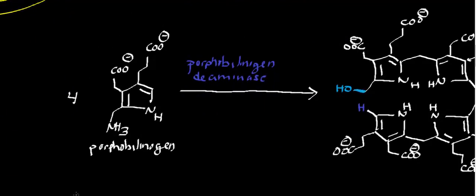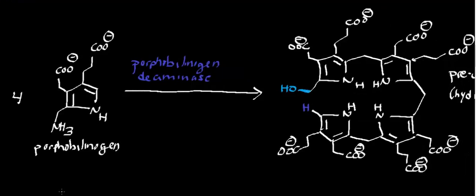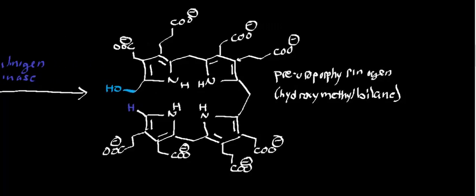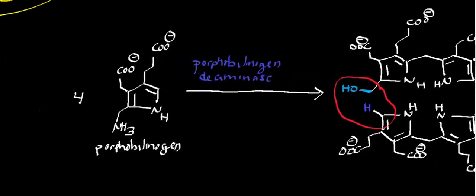This is basically the reaction we're going to do — we condense four molecules of porphobilinogen to get hydroxymethylbilane, the beginning of the porphyrin ring, which has not yet been cyclized. Notice this particular precursor to the porphyrin ring has not yet been cyclized. We can call it a tetrapyrrole because it is four pyrroles bound together, but we cannot yet call it a porphyrin ring system.